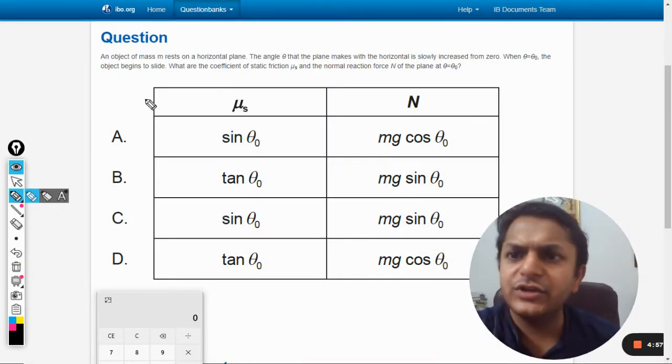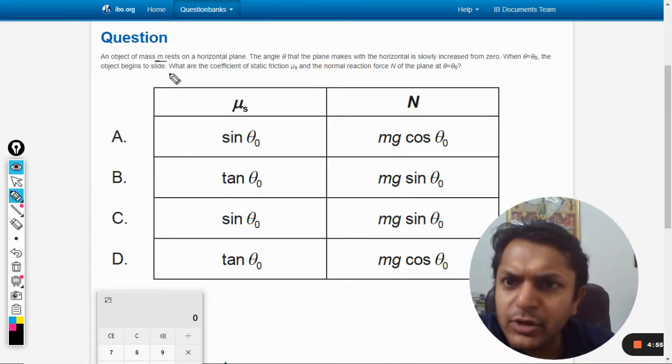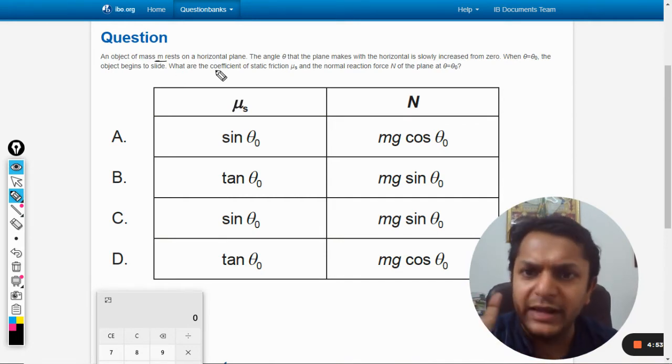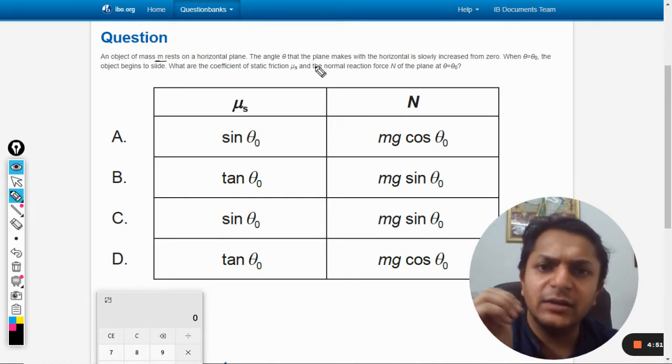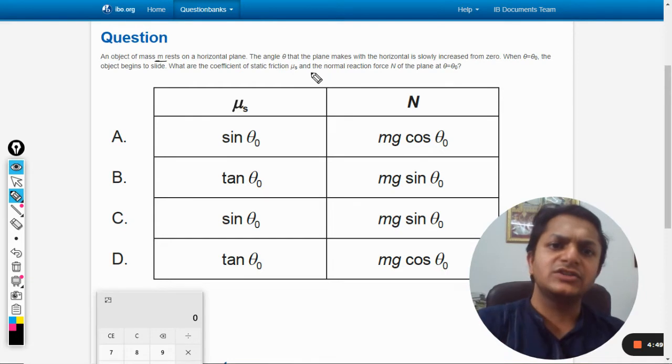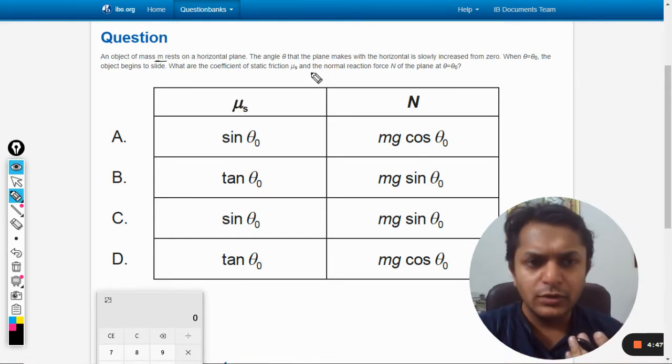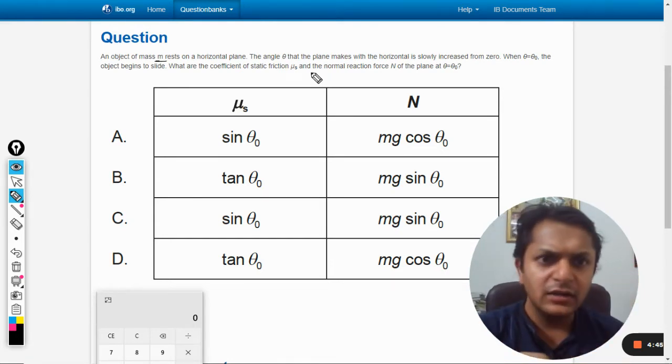In this question, an object of mass m rests on a horizontal plane. The angle theta that the plane makes with the horizontal is slowly increased from zero, so we are increasing that angle.